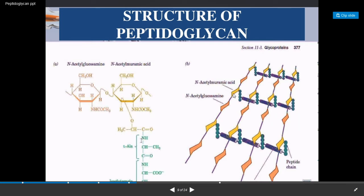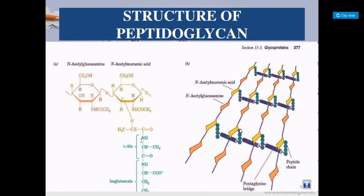In this diagram, N-acetylmuramic acid and N-acetylglucosamine are labeled. The N-acetylmuramic acid is attached to the tetrapeptide amino acid chain. The second layer of peptidoglycan also has N-acetylmuramic acid with a tetrapeptide amino acid chain attached. The two tetrapeptides are connected to each other by five glycine amino acids — the pentaglycine interbridge. This crosslinking makes the cell wall rigid and tough.